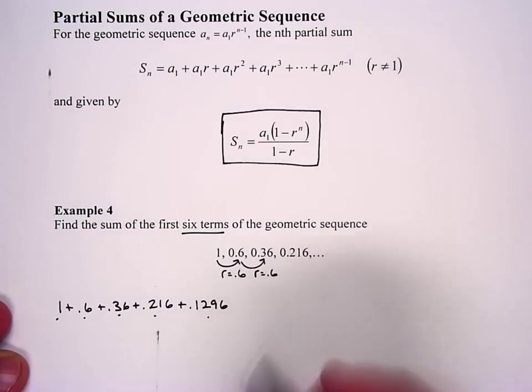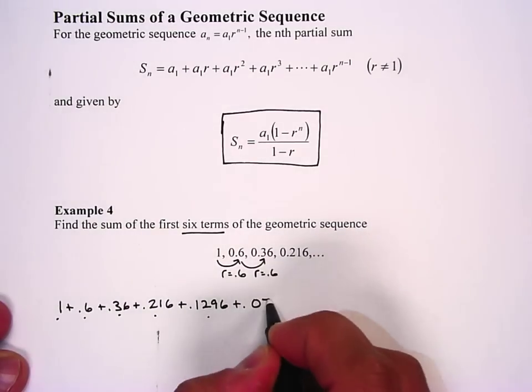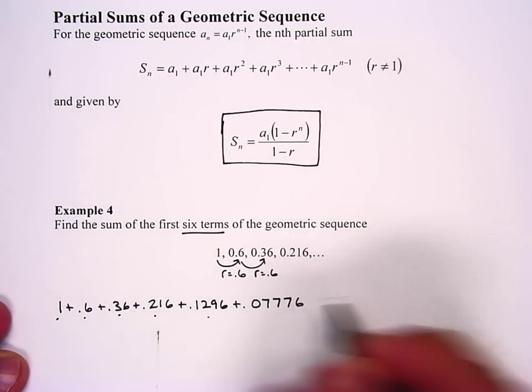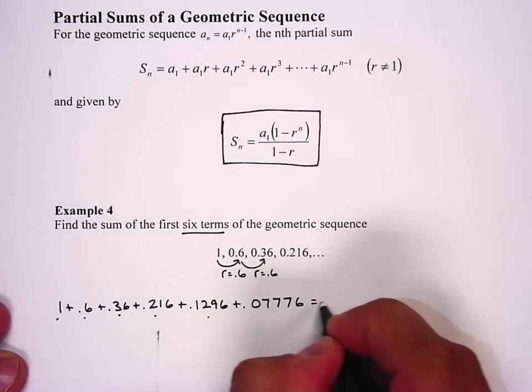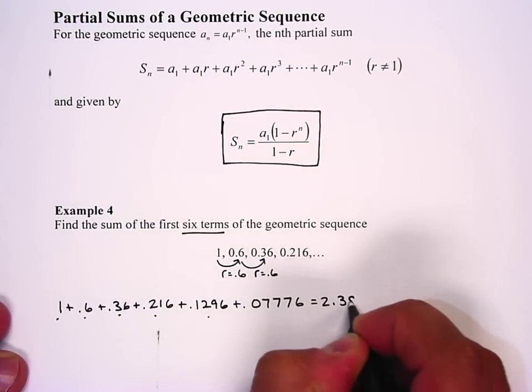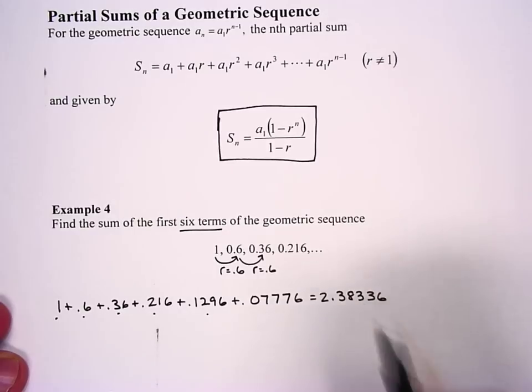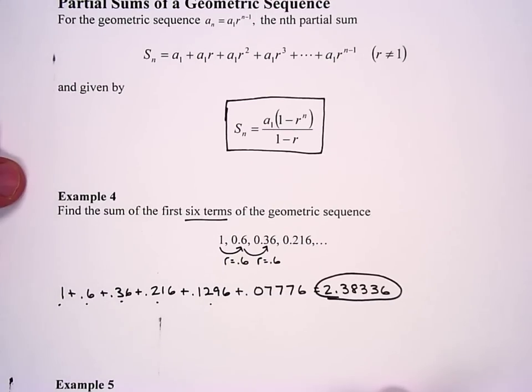Now you just add those up: 1 + 0.6 + 0.36 + 0.216 + 0.1296 + 0.07776 and I get 2.38336. Sure that's doable, you can do that.